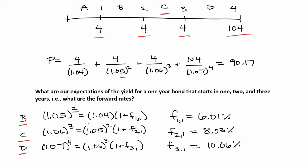The alternative strategy is to invest in a one-year bond today at four percent, and then roll over those proceeds into another one-year bond. We don't know what that interest rate is today, but we have expectations based on expectations theory. If two strategies have the same risk and the same payoffs, they must have the same total return over that window. Solving this, we find that the expected interest rate on a one-year bond starting in one year — F11 — is 6.01 percent.